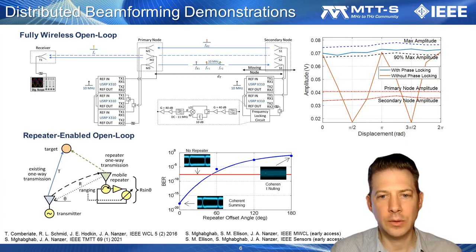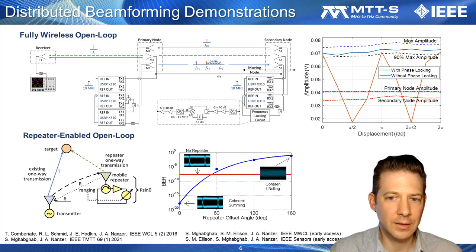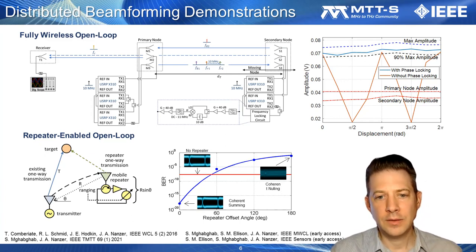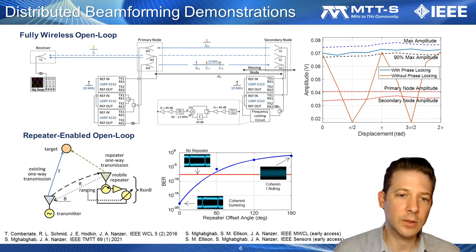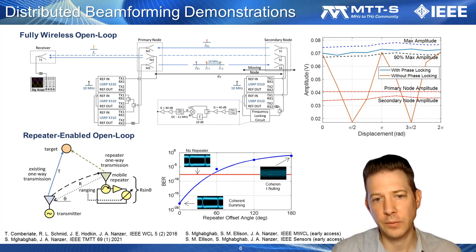The system shown here at the top is coordinated completely wirelessly. It estimates the relative change in inter-node range to update its transmission phase and maintains a steered beam to a receiver, which in this case is only measuring the received power. A signal is modulated onto this ranging waveform that the secondary node demodulates and uses to lock its local oscillator to that of the other node, and so in this way we achieve simultaneous ranging and frequency transfer.